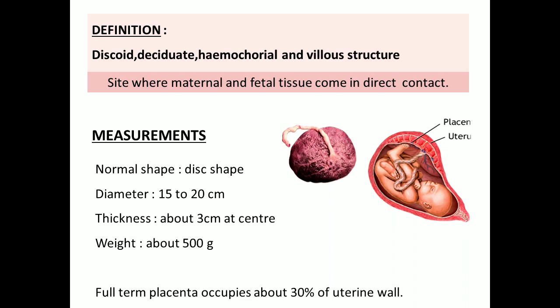The placenta is the site where maternal and fetal tissue come in direct contact. Here you can clearly see this is the maternal part — the uterine endometrium region where implantation happened — and this is the umbilical cord, which is connecting the developing fetus and the maternal parts. The placenta is the site where both fetal blood and the maternal blood will be in contact.